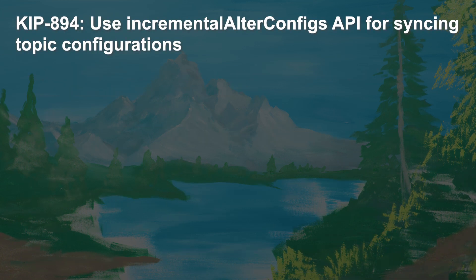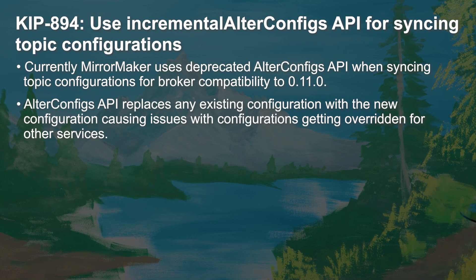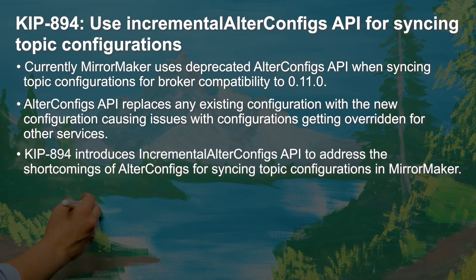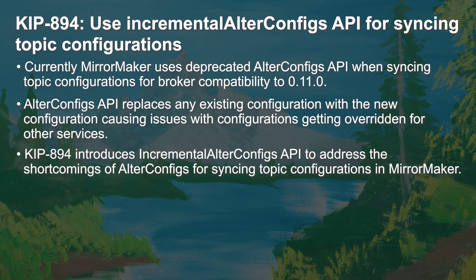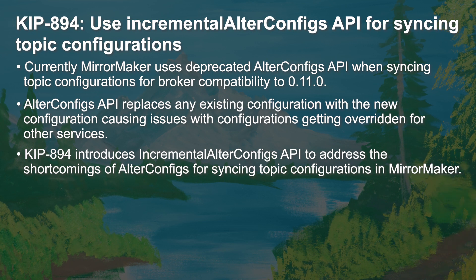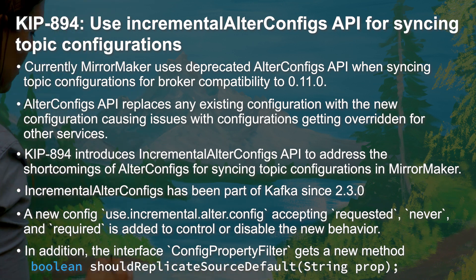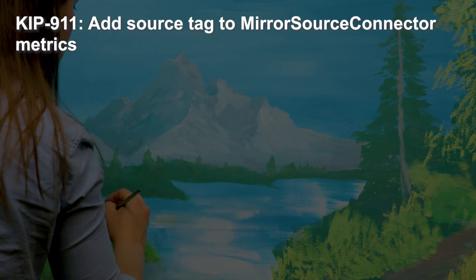Next is KIP 894, which also affects MirrorMaker 2. When syncing topic configurations for broker compatibility, MirrorMaker 2 uses the deprecated alter configs API. If you use the alter configs API to update a handful of configurations, any existing configuration parameters that aren't explicitly sent along will be reset to the default value, which is not always a good thing. In MirrorMaker 2, this could result in remote topic configurations being removed unintentionally. Since Apache Kafka version 2.3, the more flexible incremental alter configs API has been available, and KIP 894 makes it available for use in MirrorMaker 2. The change adds a new use.incremental.alter.config configuration which takes values requested, never, or required.